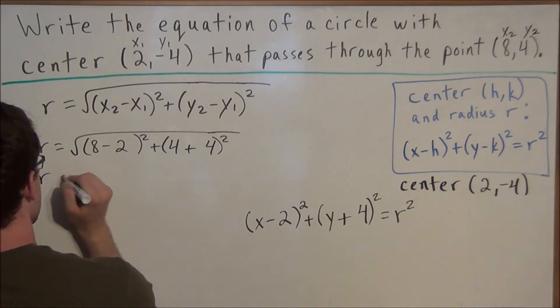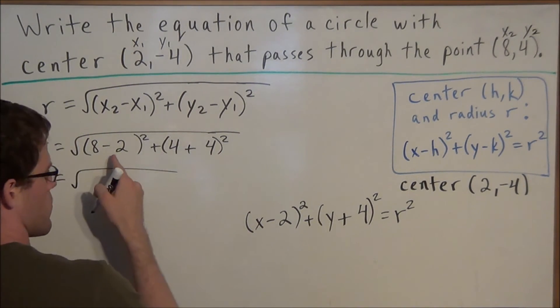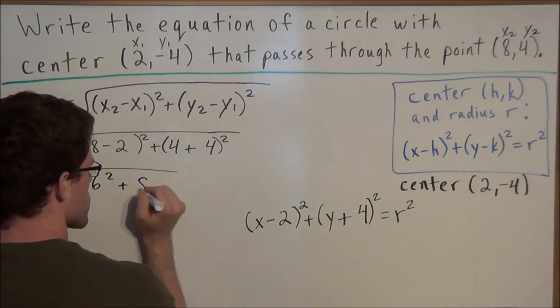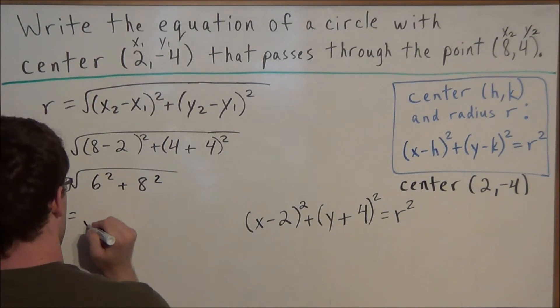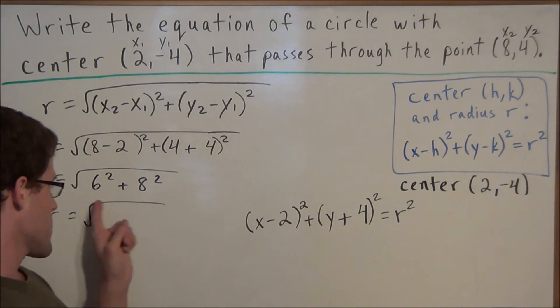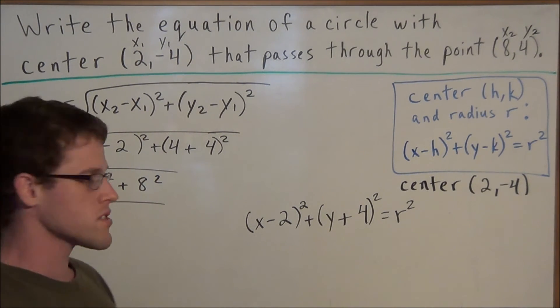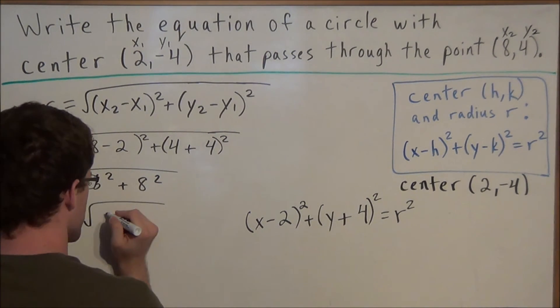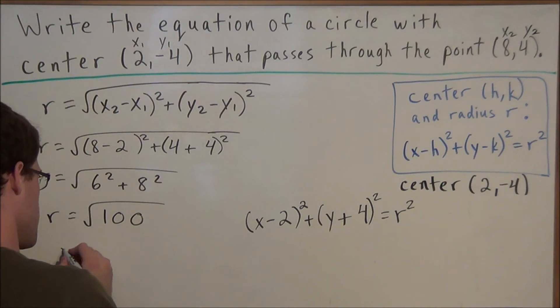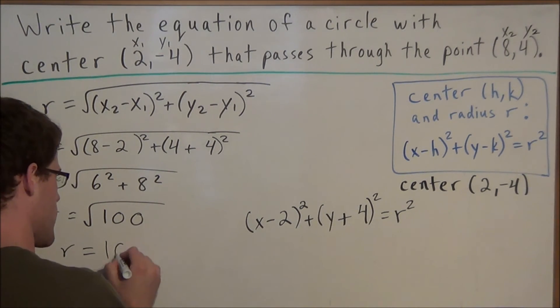So then our radius is equal to, we have 6 squared for the first, plus, and we have 8 squared for the next one. So then for this step here we've got 36 for 6 squared. 8 times 8 is 64, so 36 plus 64 is equal to 100. And notice 100 is a perfect square. And the square root of 100 is 10.